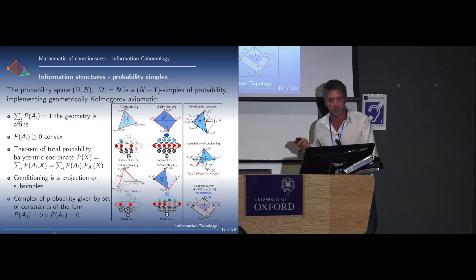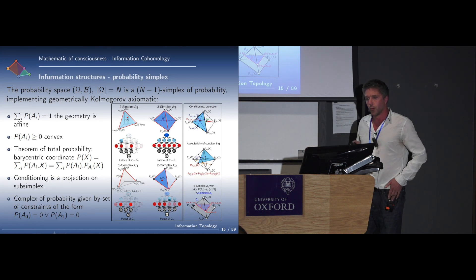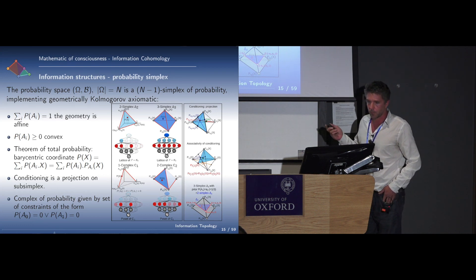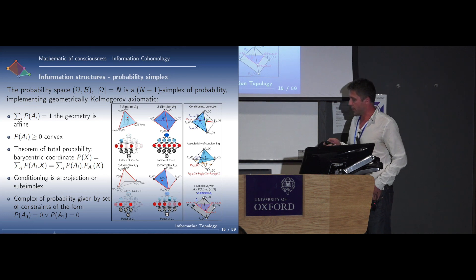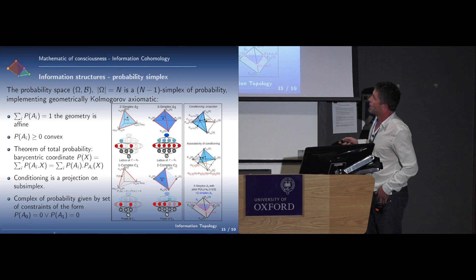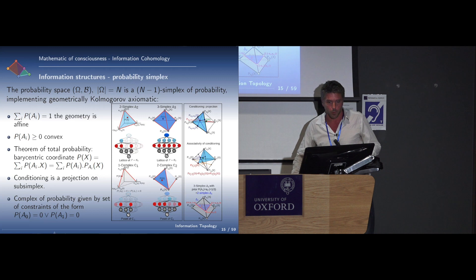The framework is based on the information structure, which is based on the usual finite probability axiomatic given by Kolmogorov. It is seen geometrically as a simplex, a probability simplex. The geometry is affine due to this. It is convex. There are coordinates which are barycentric coordinates because of the theorem of total probability. Conditioning is a projection into a lower dimensional subsimplex.